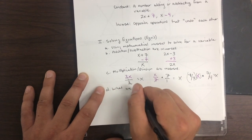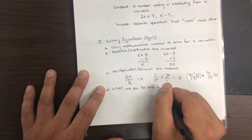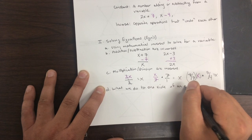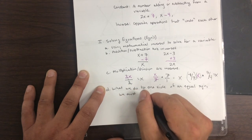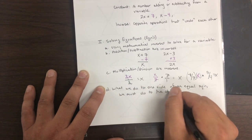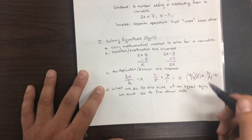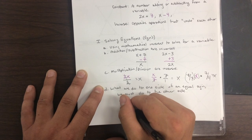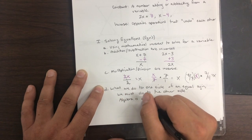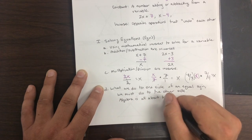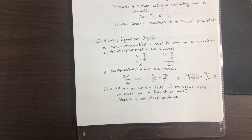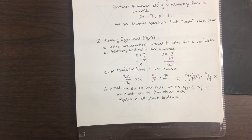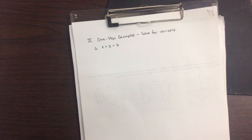Lastly: what we do to one side of an equal sign, we must do to the other side. Algebra is all about balance. We can do pretty much anything we want to equations — the one rule is that you just have to do it on both sides. There has to be balance on both sides of the equation.